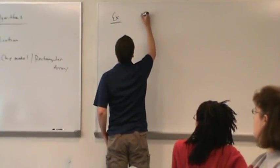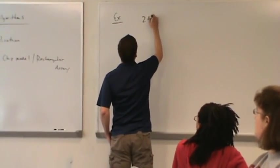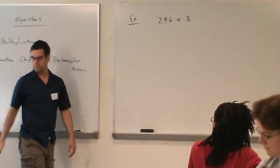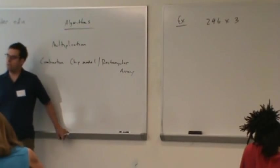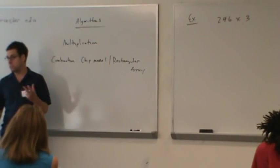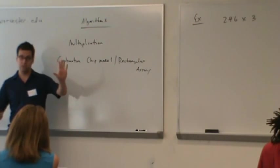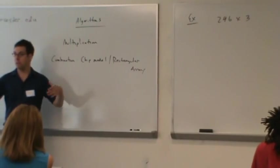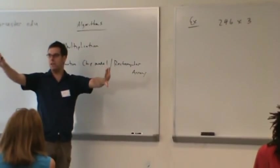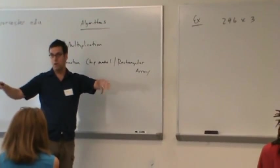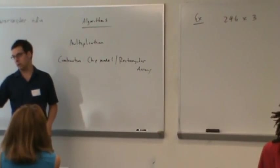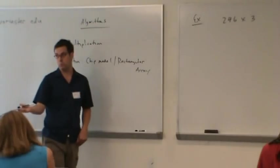I'll do something like 246 times 3. Remember the goal of this whole chip model process. For addition and subtraction, the goal of chip models was to explain the algorithms. Everything we did on the chip model for addition can be repeated in the addition algorithm. Everything we did with the subtraction chip model has its place in the subtraction algorithm. So we want the exact same thing to happen with multiplication.